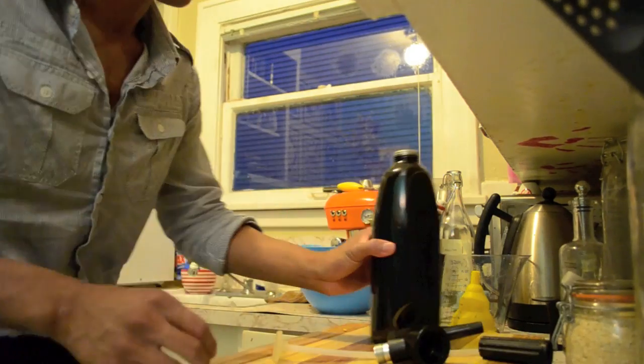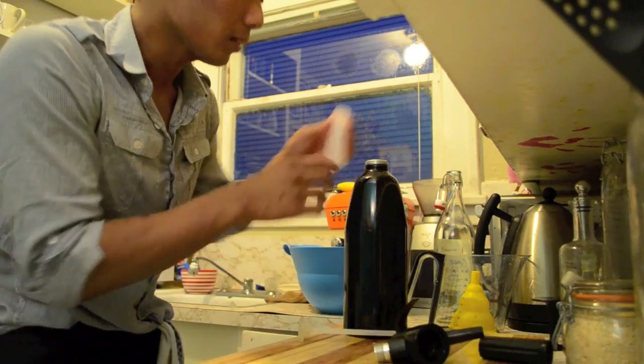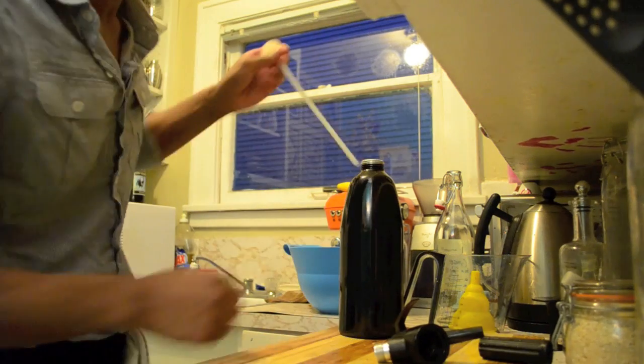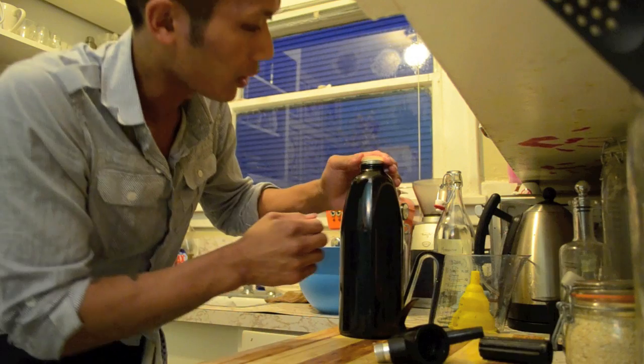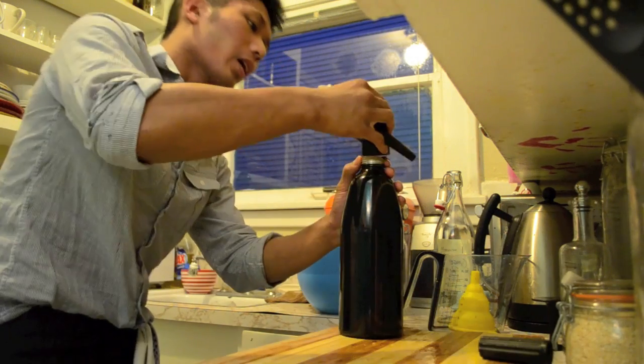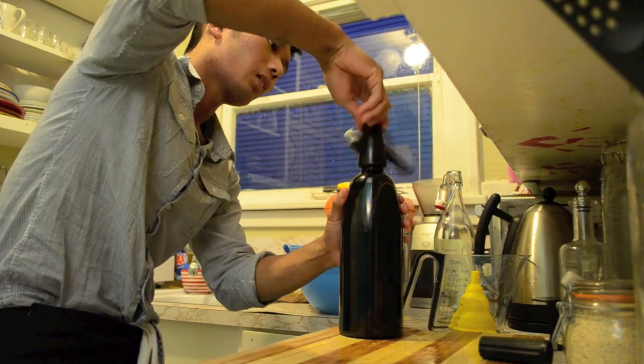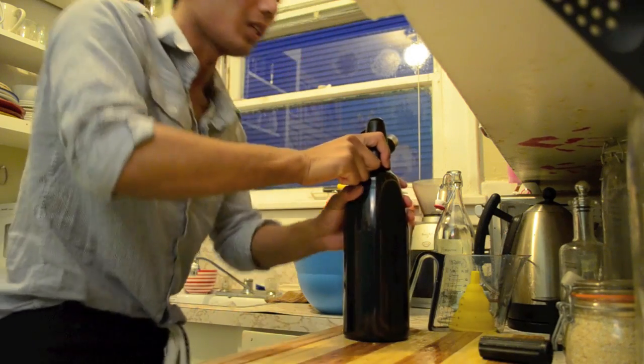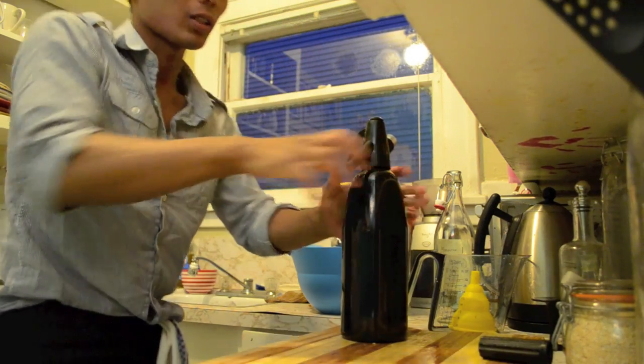Set that off to the side and now we're gonna add our seal. Make sure that it's seated, otherwise you're gonna be wearing your ginger beer instead of drinking it. Soda straw all the way down to the bottom, make sure it's flush, and then screw on the valve assembly. Make sure that's on nice and tight.